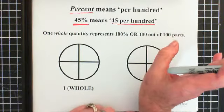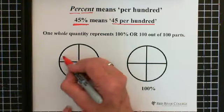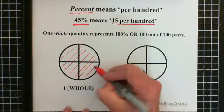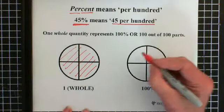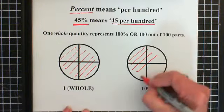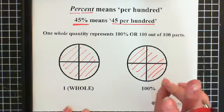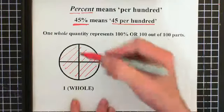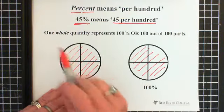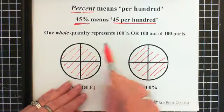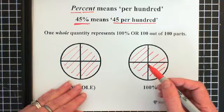Now when we're dealing with quantities, we can either talk about them as being one whole quantity. Or we can talk about that one thing as being a hundred percent. Just two different ways of looking at a certain thing. So one whole quantity represents a hundred percent, and of course with a hundred percent we have a hundred out of a hundred parts.